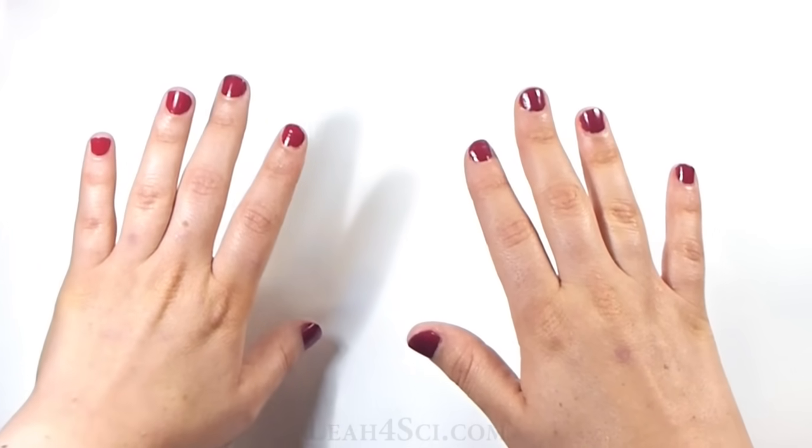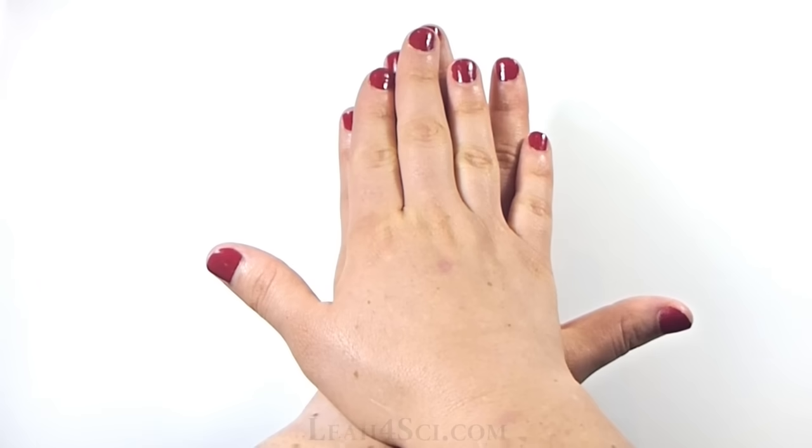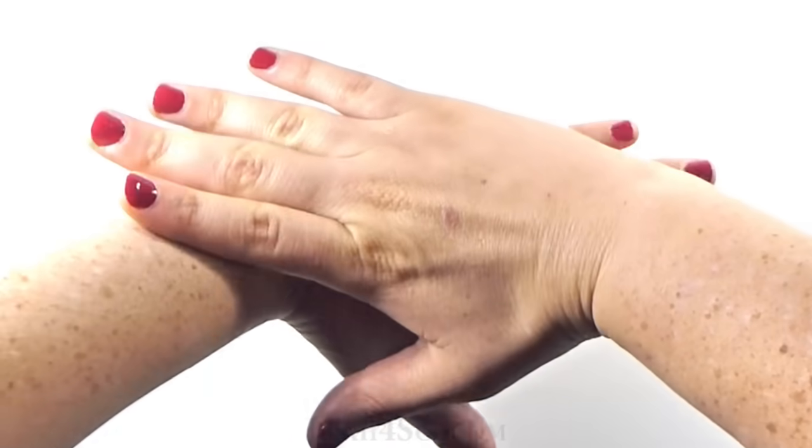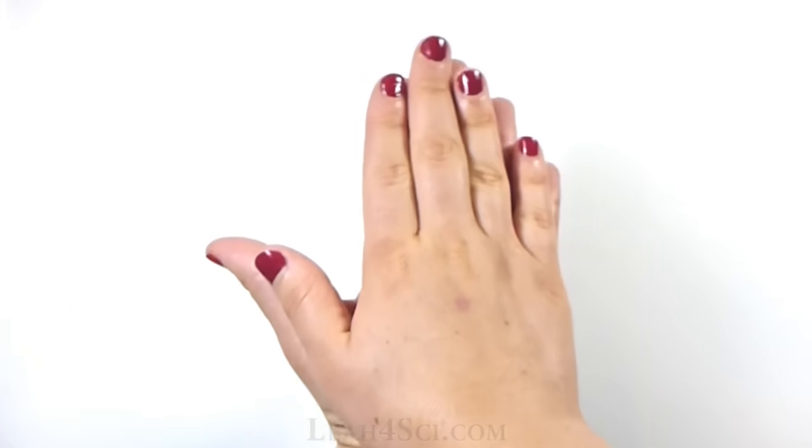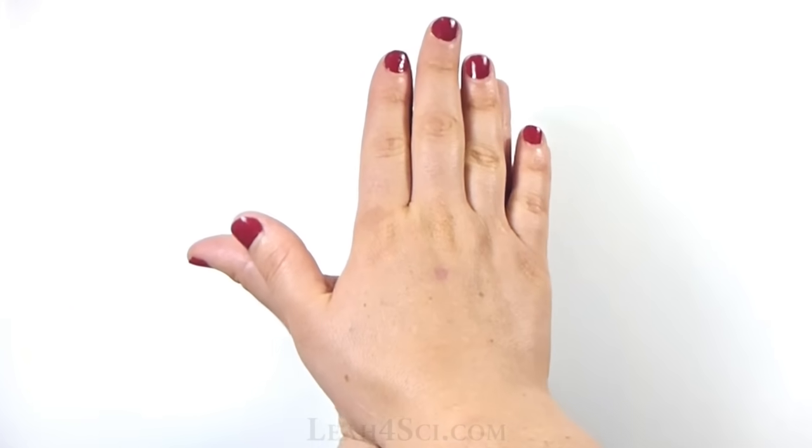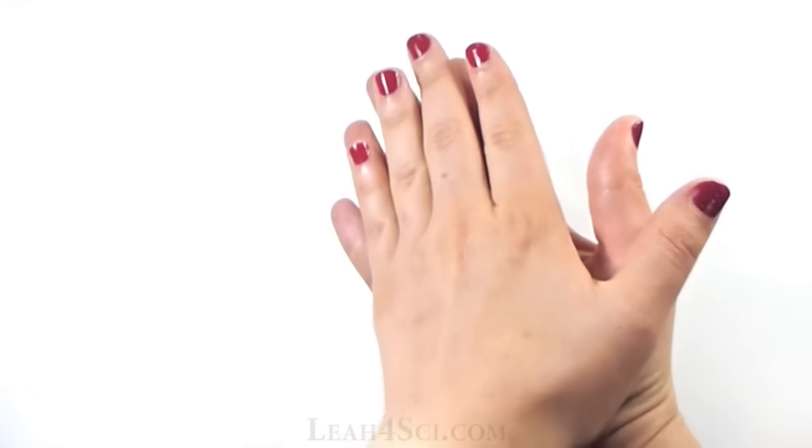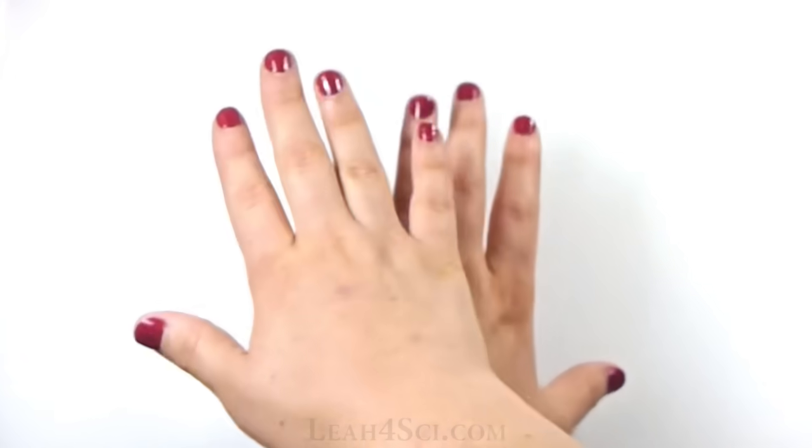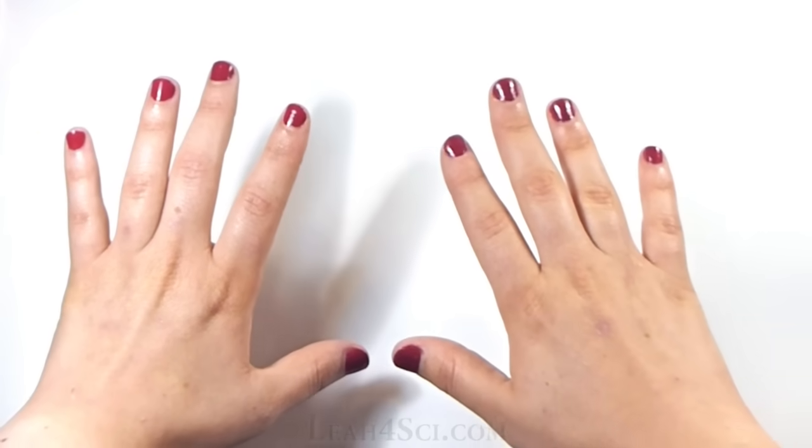But now what happens if I try to superimpose them? Well my thumbs are sticking out, so if I turn it, now my fingers are in opposite direction. If I flip my hand so that my thumbs and fingers are aligned, well my palms are in opposite direction. No matter what I do, there is no way for me to perfectly superimpose my right and left hand, making them mirror images to each other.